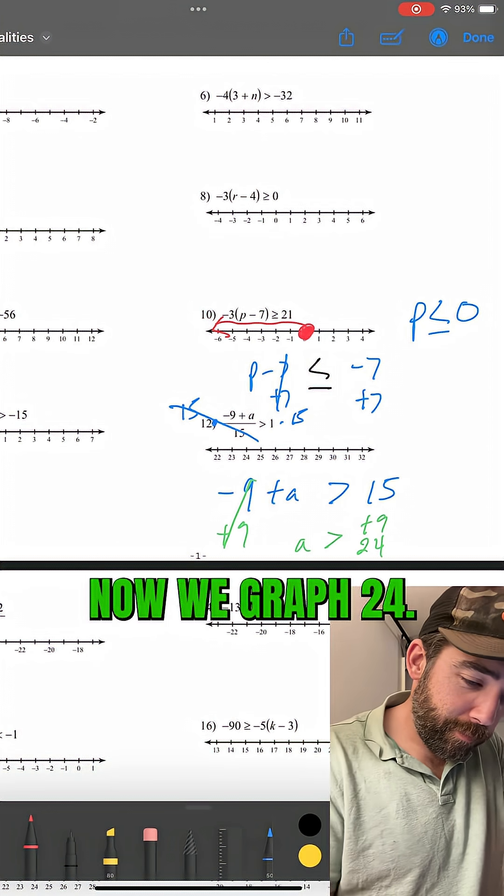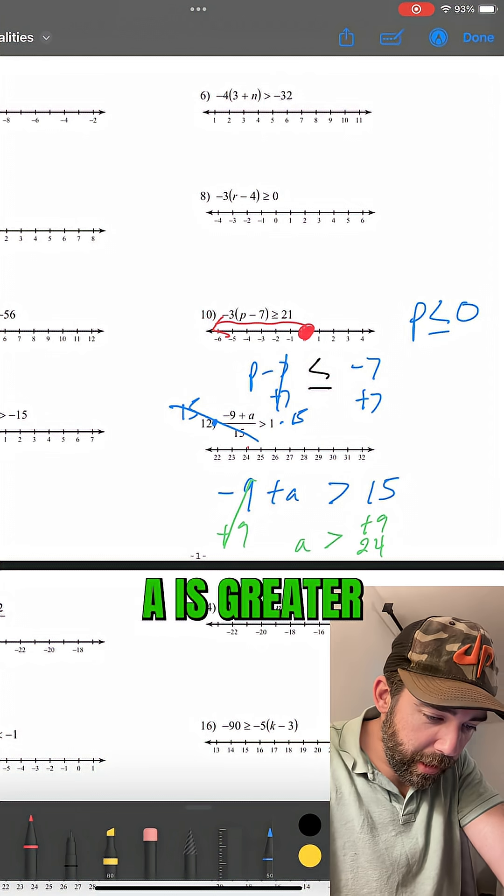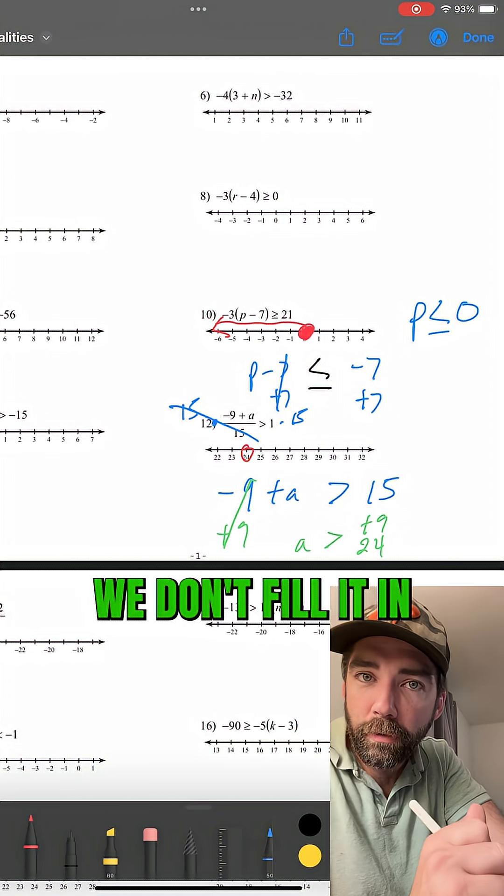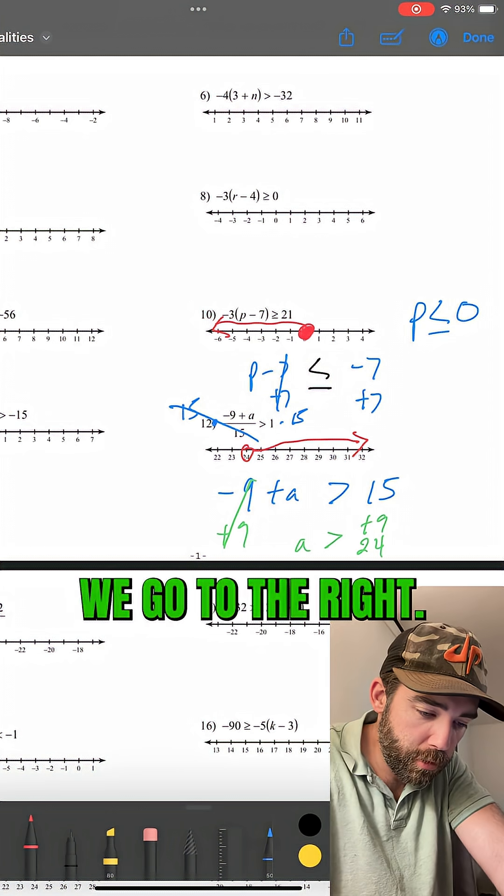Now we graph. 24, here it is. A is greater than that, so we circle it. We don't fill it in because it's not equal to. And we go to the right.